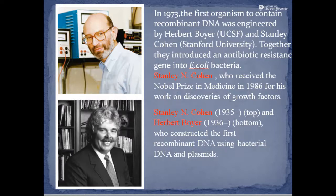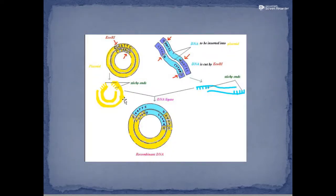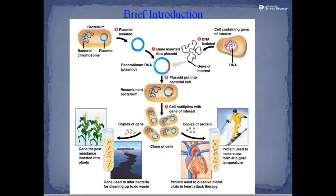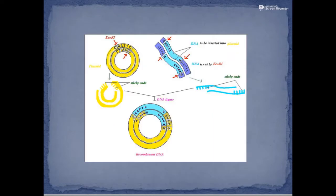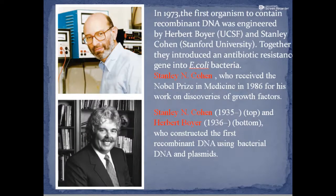Herbert Boyer was also part of these experiments, and they constructed the first recombinant DNA using bacterial DNA and plasmids. The recombinant DNA has to be inserted into a particular host. The formation of recombinant DNA was discovered by Paul Berg, and it was Stanley Cohen and Herbert Boyer who inserted this recombinant DNA into a bacterial host. In 1972, Paul Berg produced recombinant DNA, and in 1973, Cohen and Boyer introduced it into the bacterial host.